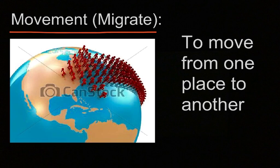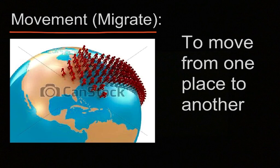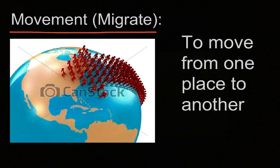The fourth essential element of geography is movement, also known as migrate — to move from one place to another. The United States was built on immigrants who migrated and moved here. Commonly, many people migrated from Spain to Mexico and then from Mexico into the United States, which is where most of us get our ancestors from. That is migrate, or movement: to move from one place to another.